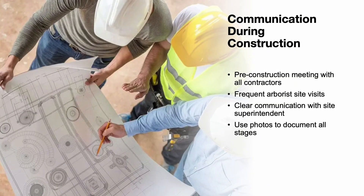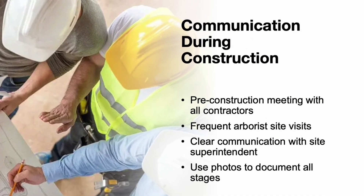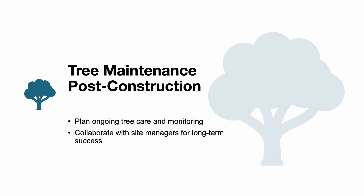Effective communication is essential. A single uninformed subcontractor can undo months of planning. Arborists should hold a pre-construction meeting with everyone on site. Regular site visits by the arborist are also crucial. The arborist should maintain direct contact with the superintendent and monitor all activity around the tree protection zone. Photos taken throughout the project can be valuable documentation in the event of a dispute. Once construction is complete, a post-construction care plan must be implemented, including regular monitoring and ongoing communication with the project manager to ensure trees receive the care they need during recovery.